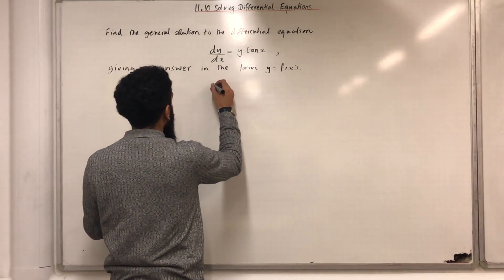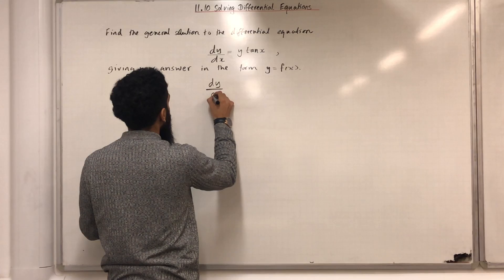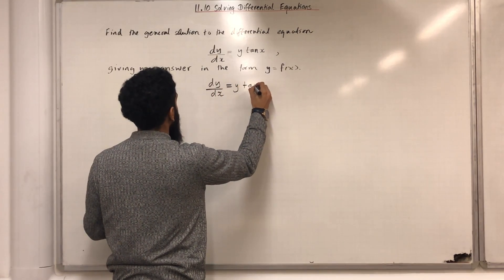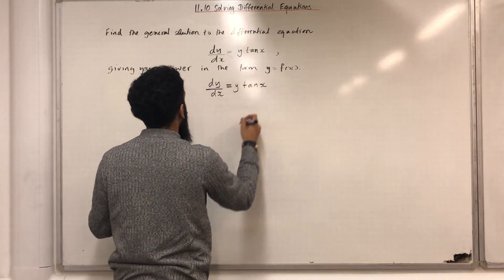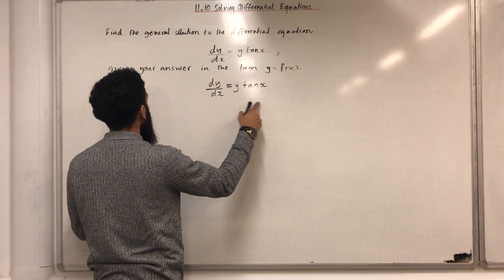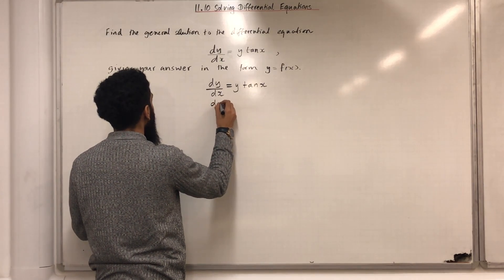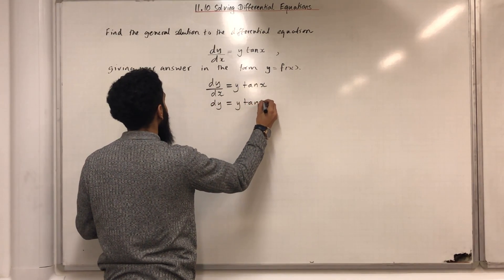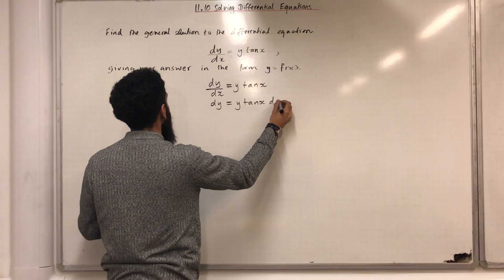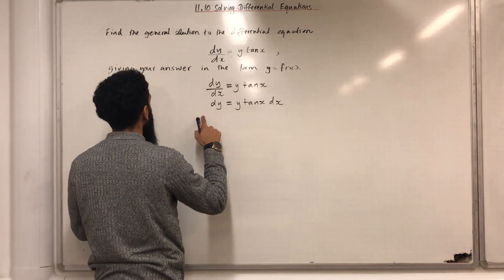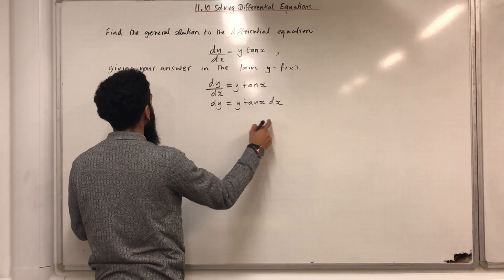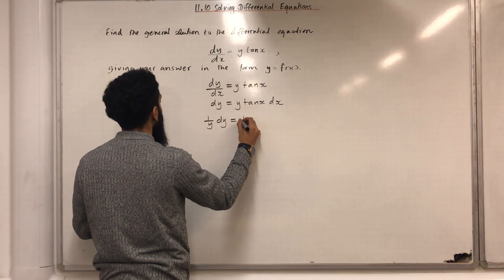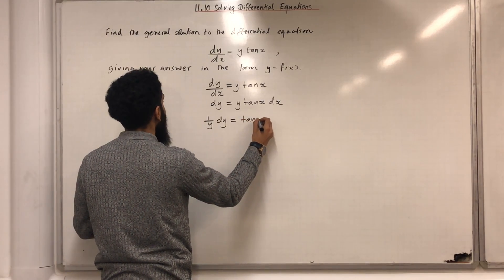I have dy over dx equals y tan x. I can multiply both sides of the equation by dx to give me dy equals y tan x dx. I can then divide both sides of the equation by y to give me 1 over y dy equals tan x dx.